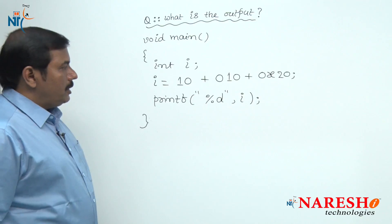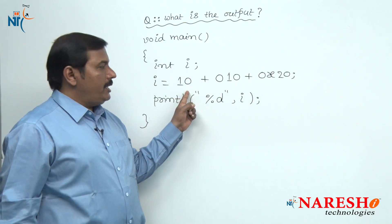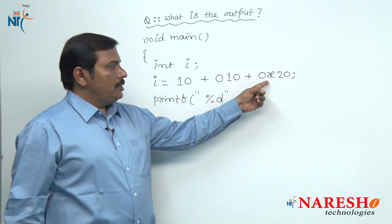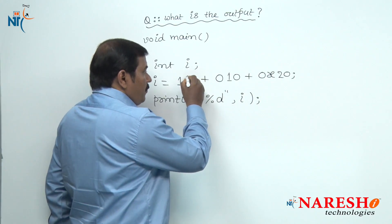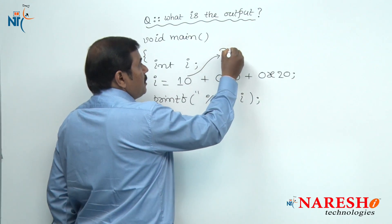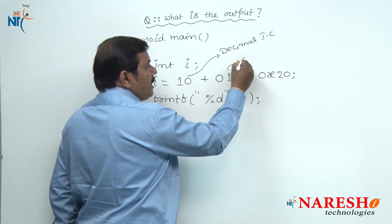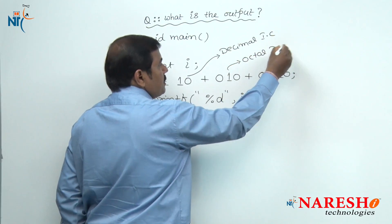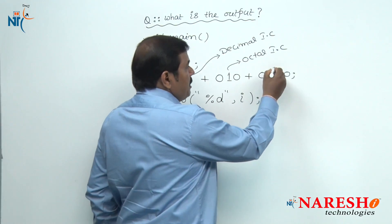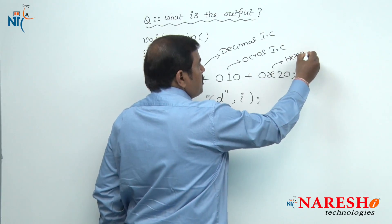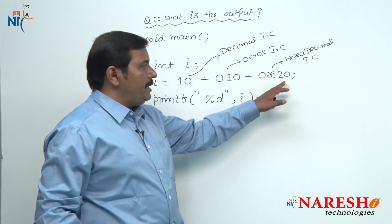Let us look at this question. In this question, there is an arithmetic expression: 10 + 010 + 0x20. The first integer constant 10 is a decimal integer constant. The constant 010 is an octal integer constant because it is preceded with 0, and 0x20 is a hexadecimal integer constant as it is preceded with 0x.